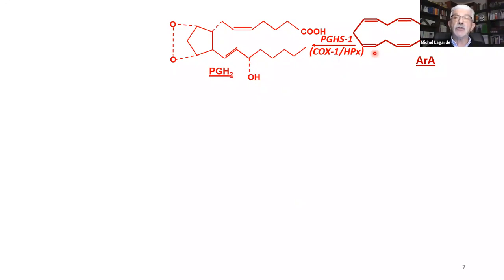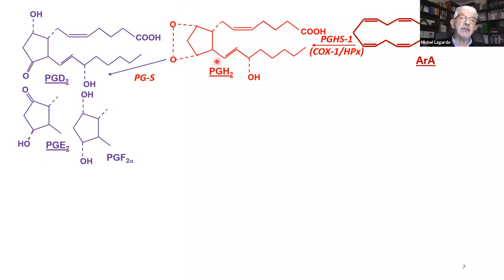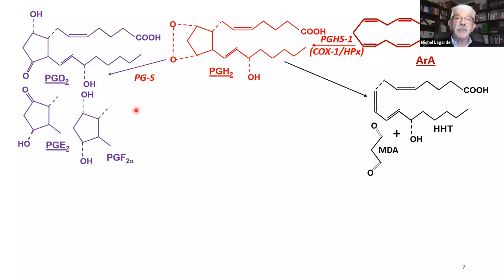Instability of PGH2 also leads to cleavage products: MDA (malondialdehyde), a good marker of lipid peroxidation, and HHT (12-hydroxyheptadecatrienoic acid), a C17 fatty acid with a hydroxyl at carbon 12. Characteristic to platelets is the presence of thromboxane synthase, which isomerizes PGH2 into thromboxane A2, an extremely potent aggregating agent with a lifespan of only about 30 seconds. Thromboxane A2 is therefore very rapidly hydrolyzed into thromboxane B2, which can be measured as an indirect indicator of platelet activation.